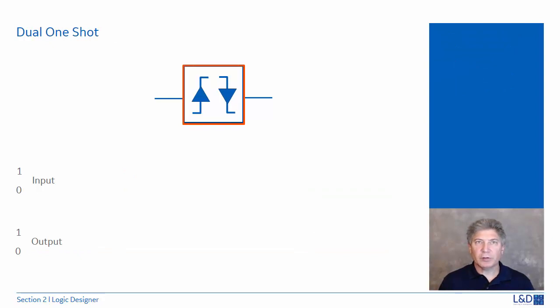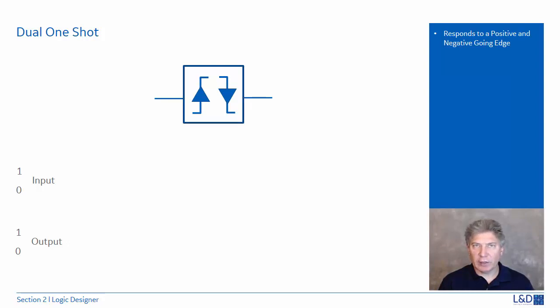The symbol here is for a dual one-shot. A dual one-shot symbol responds to both a positive and negative going edge in the logic designer diagram. It also generates two pulses.